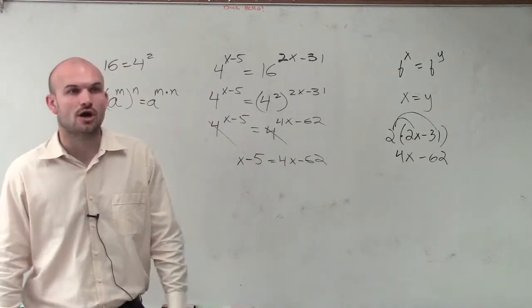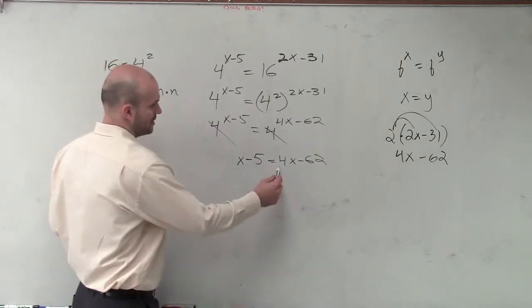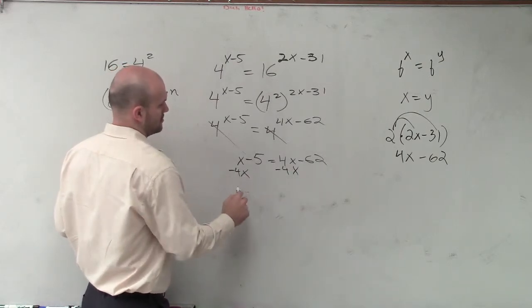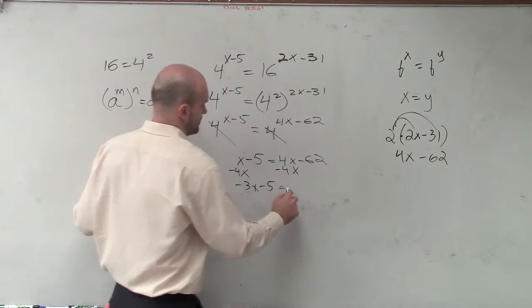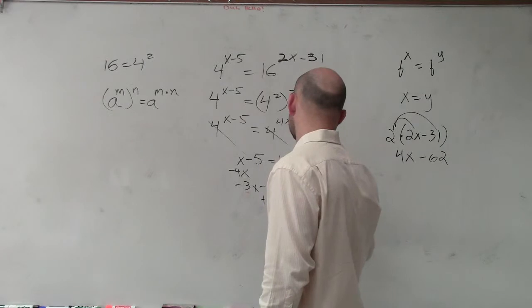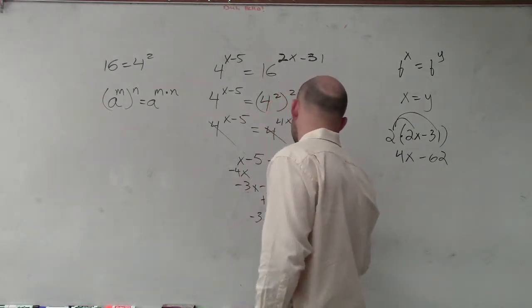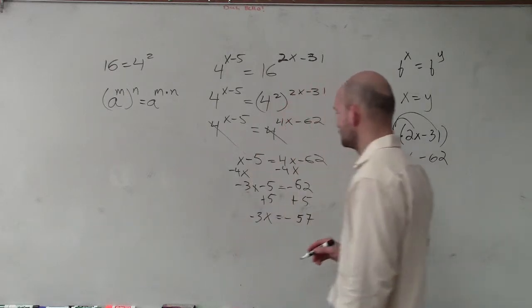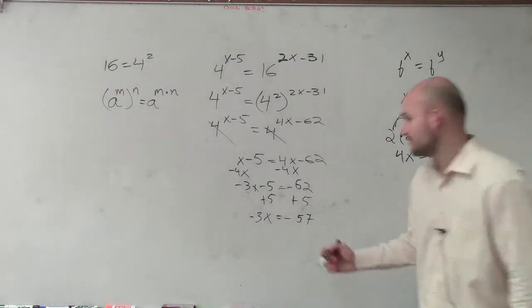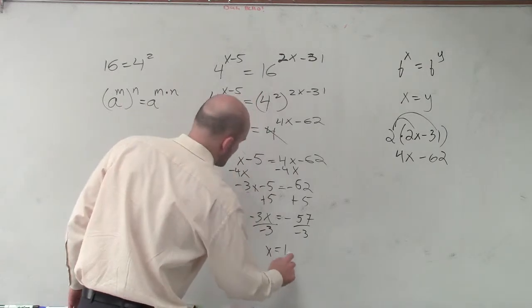And now we just need to solve using our inverse operations. So let's see here, let's subtract the 4x, and let's add 5. All right, and then divide by negative 3, x equals a positive 19.